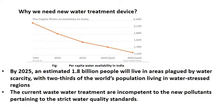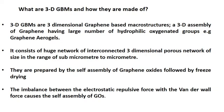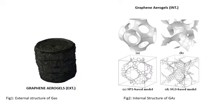What are 3D GBMs and how are they made? 3D GBMs are three-dimensional graphene-based macrostructures, or a self-assembly of graphene or graphene oxides, having a large number of hydrophilic oxygenated groups — for example, graphene aerogels — which help in removing organic pollutants. They consist of a huge network of interconnected three-dimensional porous structures in the size range of sub-micrometer to micrometer, which helps in the fast kinetics of adsorption. They are prepared by the self-assembly of graphene oxides followed by freeze drying, where the imbalance between electrostatic repulsive force and van der Waals force causes the self-assembly of the graphene.